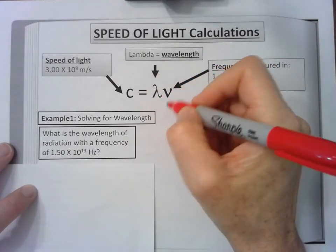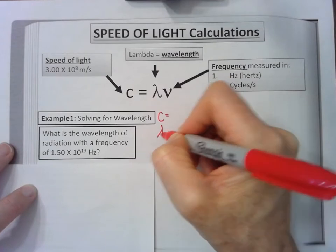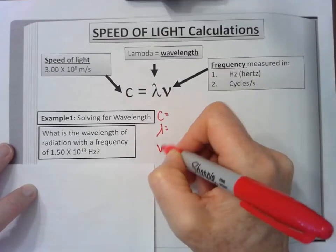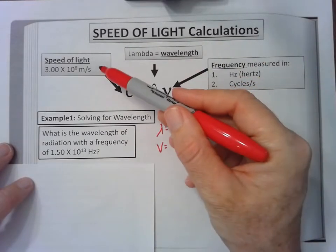C, lambda, frequency, or nu. I'm going to put in the numbers that I have given to me so I know what I'm solving for. We always have the speed of light.